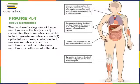Tissue membranes are continuous flat multicellular sheets that cover or line body parts. There are two broad categories. Connective tissue membranes are composed of only connective tissue; the example shown here is a synovial membrane that lines the joint cavity and produces synovial fluid to lubricate the joint.